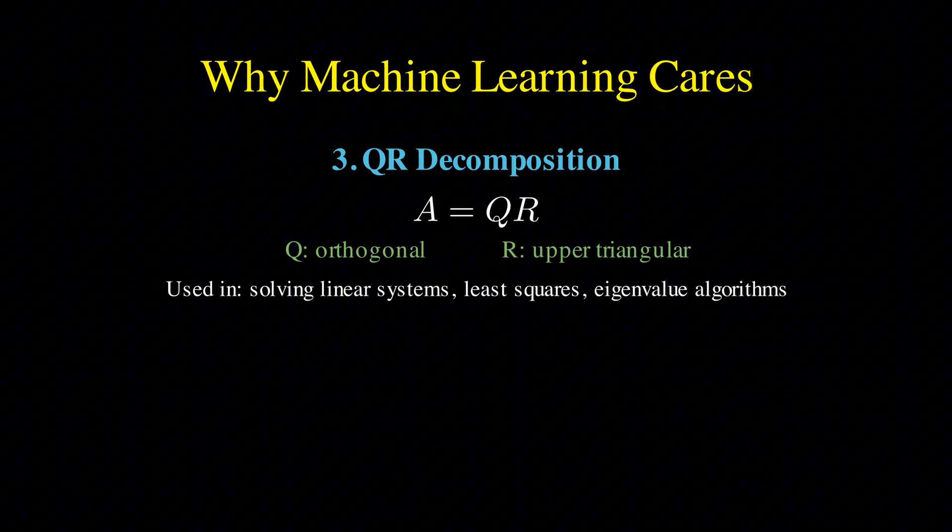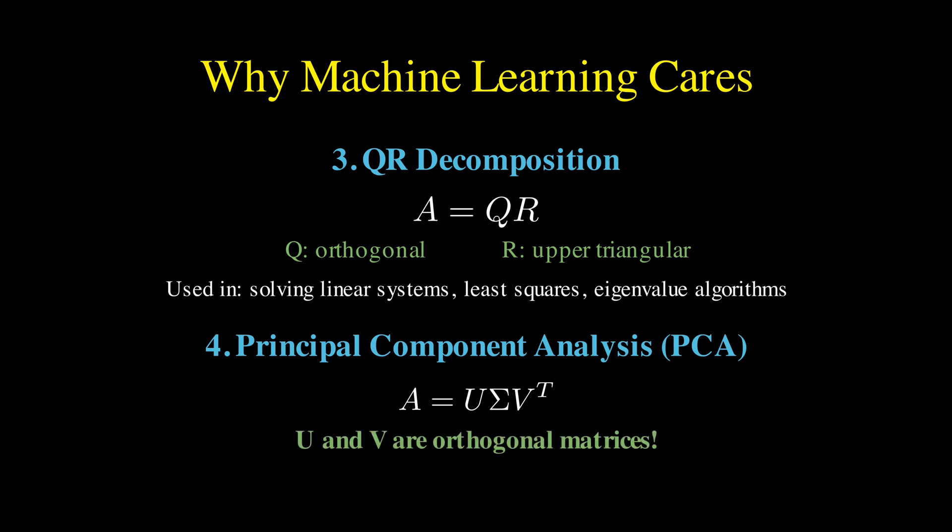Fourth, and perhaps most prominently, we have principal component analysis, which relies on the singular value decomposition. The SVD writes any matrix A as U sigma V transpose, where U and V are orthogonal matrices and sigma is diagonal.